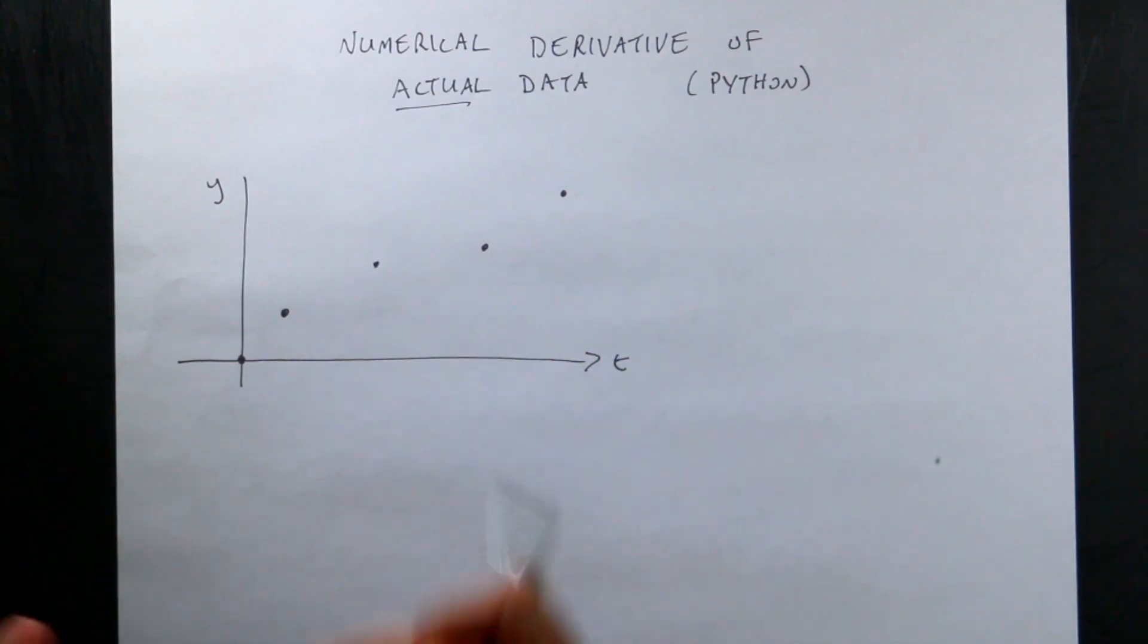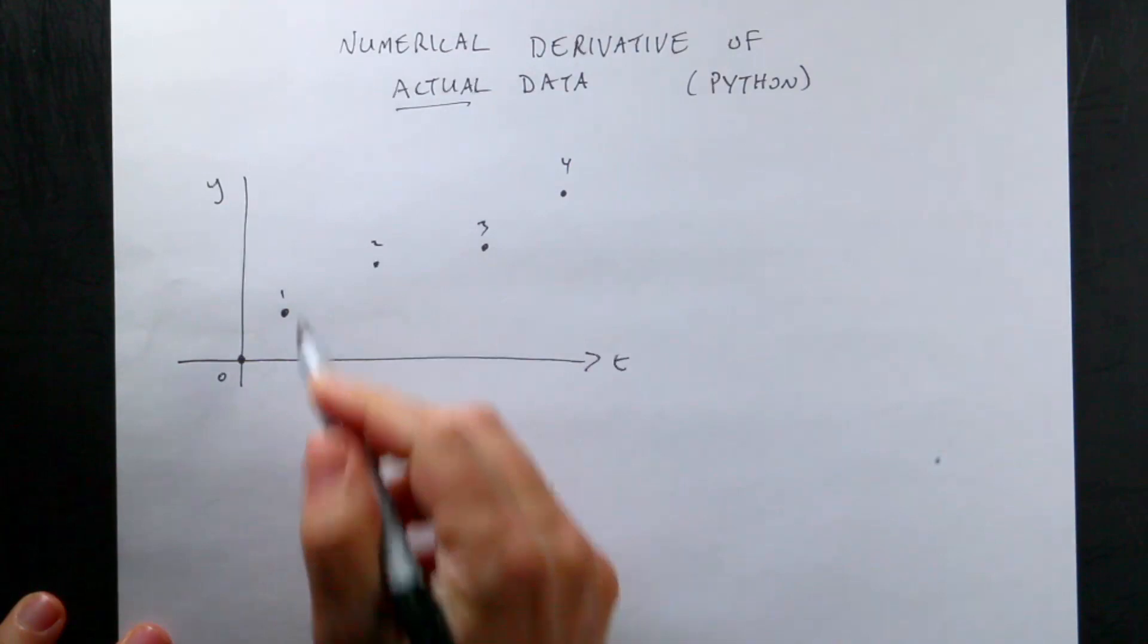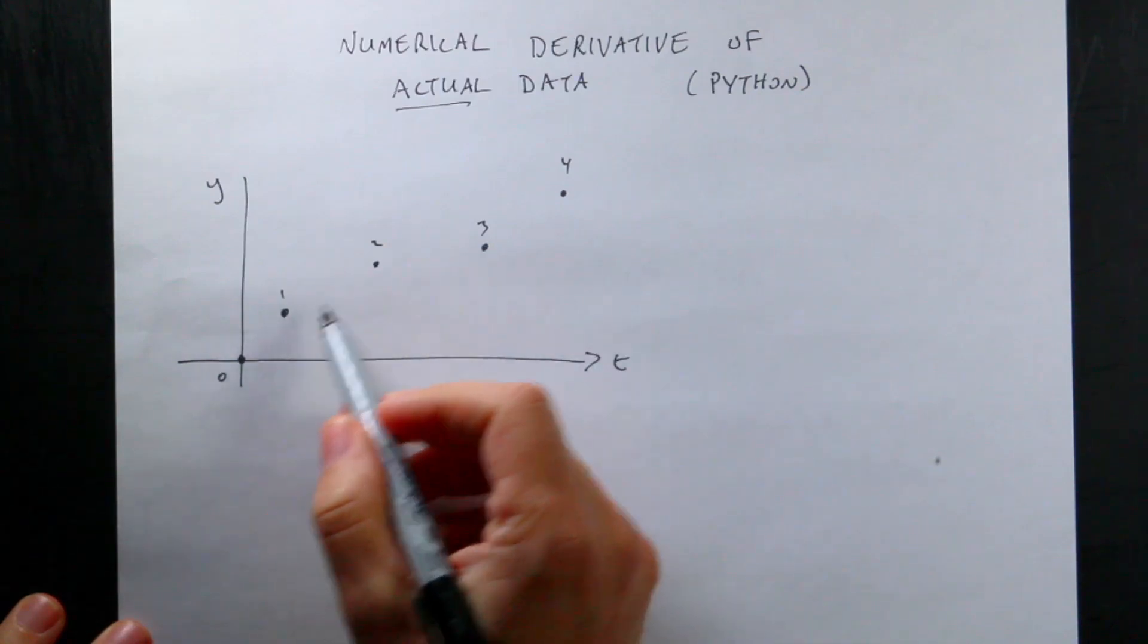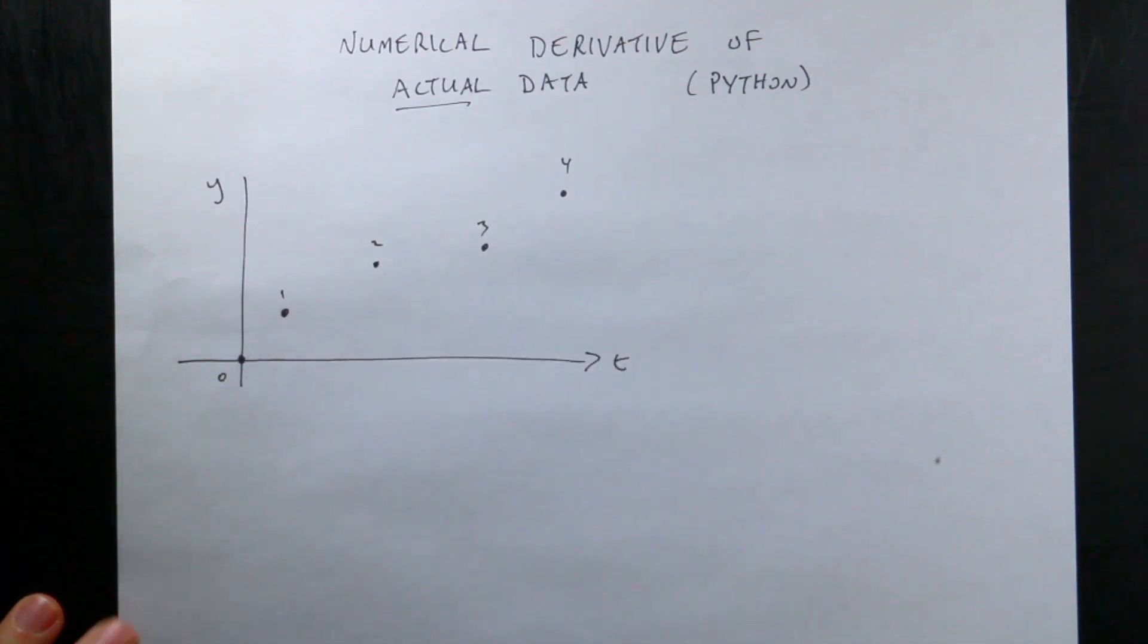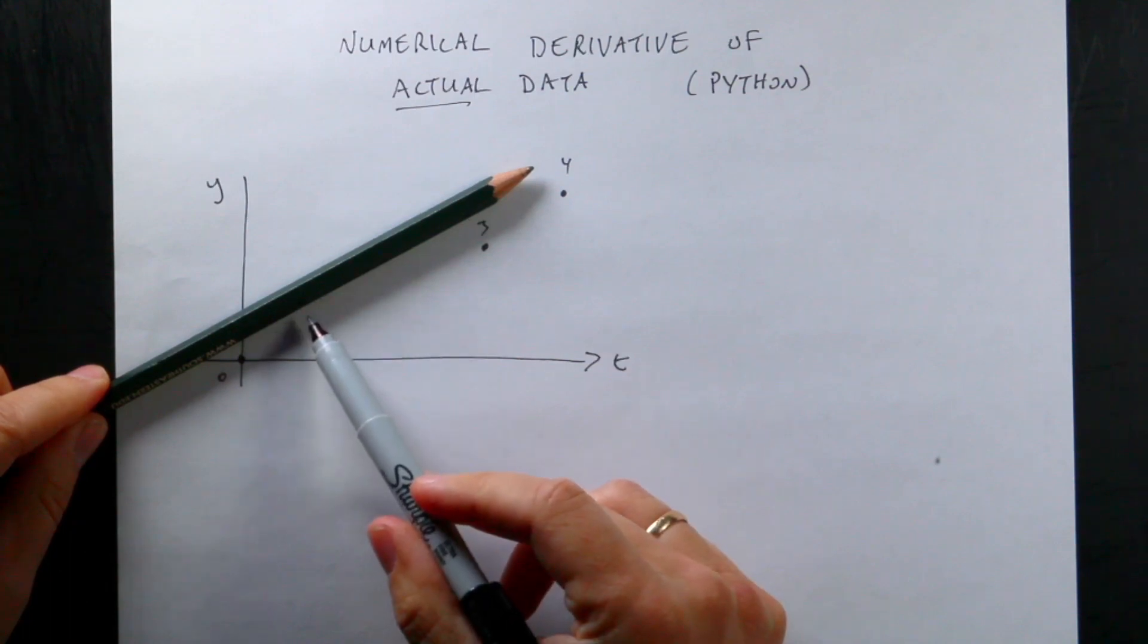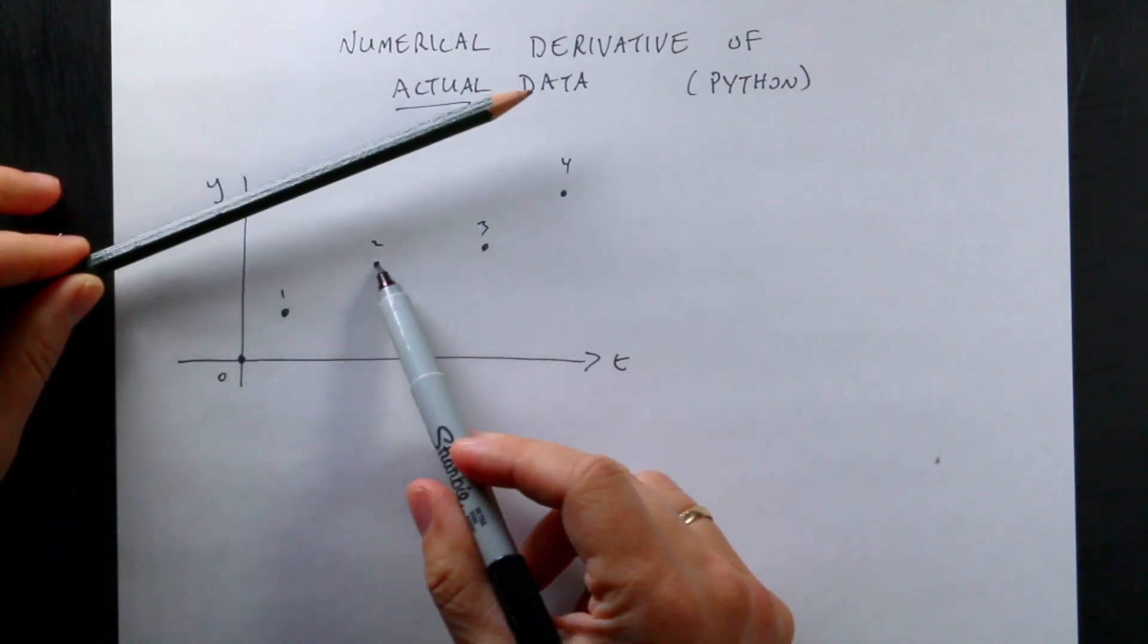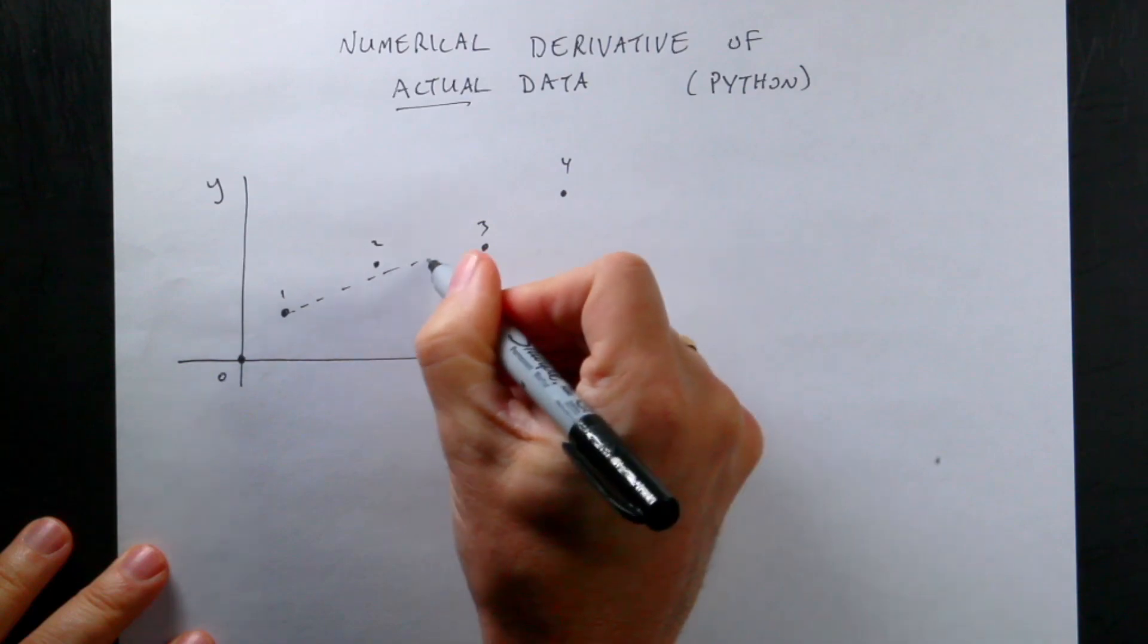In the last case, I built each data point one at a time. So I always found the derivative at this point using the previous one. Now in this case, I'm going to have all the data to begin with. So I can use a different method to take the derivative. Let's just number these values as 0, 1, 2, 3, and 4. So each one will be a data point: Y0, T0, Y1, T1, and so forth. Let's say I want to find the derivative at this point. In the last case, if I didn't know this data point already, I just used the slope between this point and the point before it to find that. But that ignores what happens in the future.